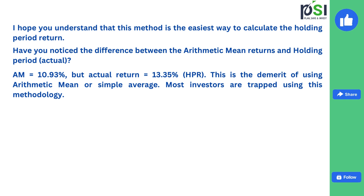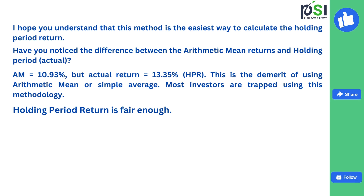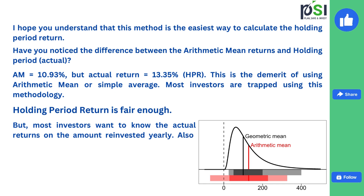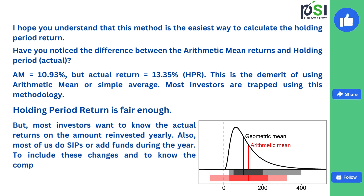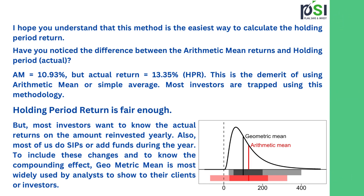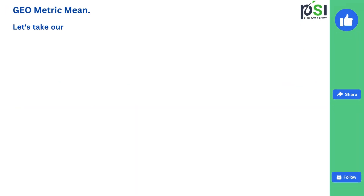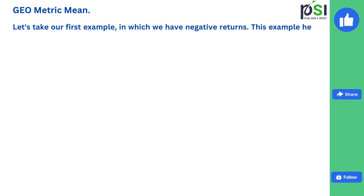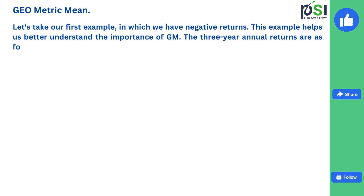You might think holding period return is fair enough and you can use it — and it is up to you. But most investors want to know the actual returns on the amount reinvested yearly. Also, most of us do SIPs or add funds during the year. To include these changes and to know the compounding effect, geometric mean is most widely used by analysts to show their clients or investors. Let's examine the first example with negative returns, as it helps us better understand the importance of geometric mean.